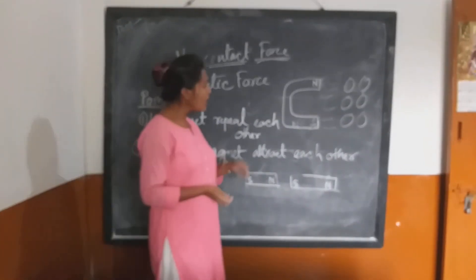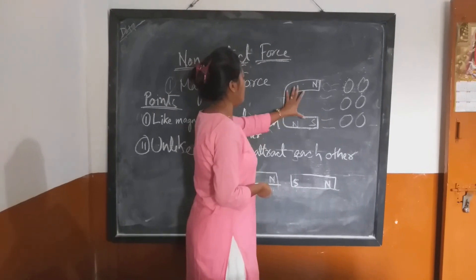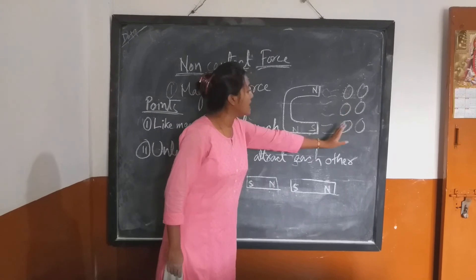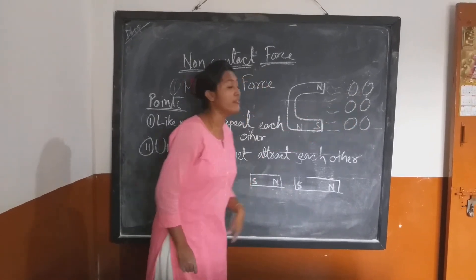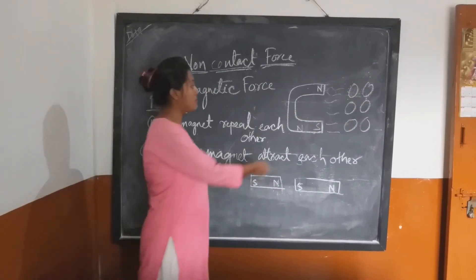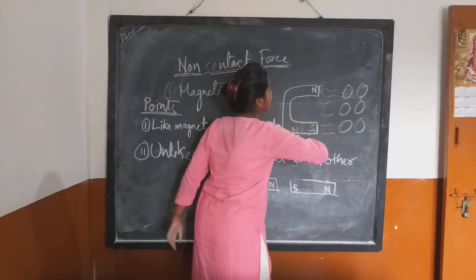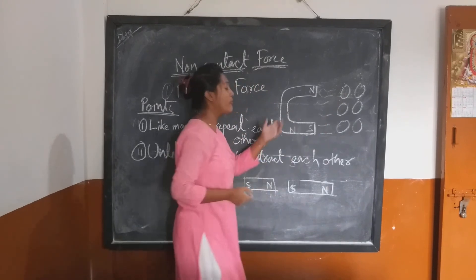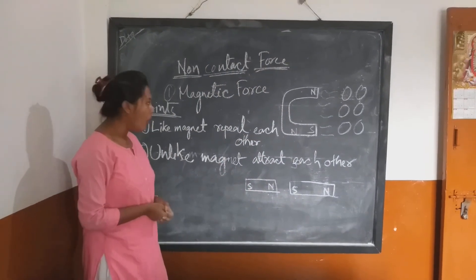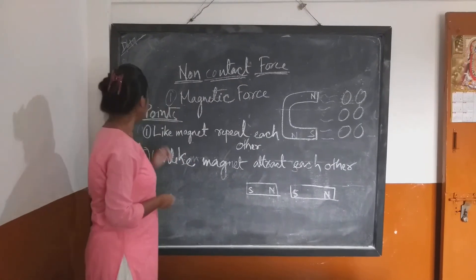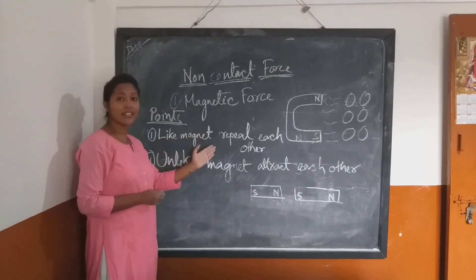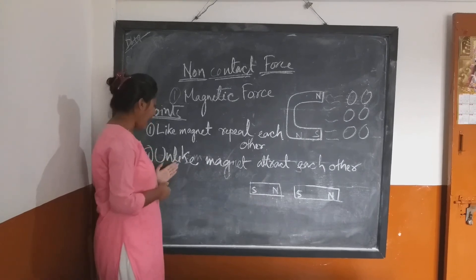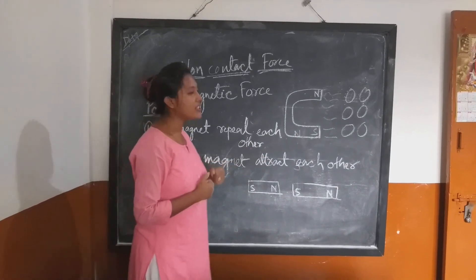Suppose a magnet is placed here. The magnet can attract another object if that object has a magnetic field. Why? Because a magnet can create a magnetic field, and for that reason it can attract objects from far away also.